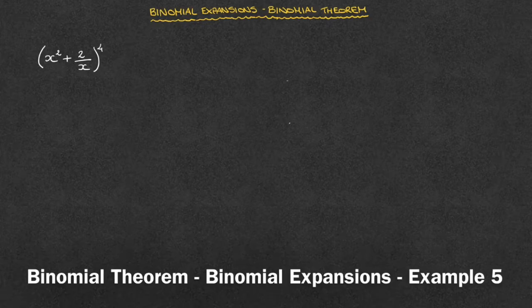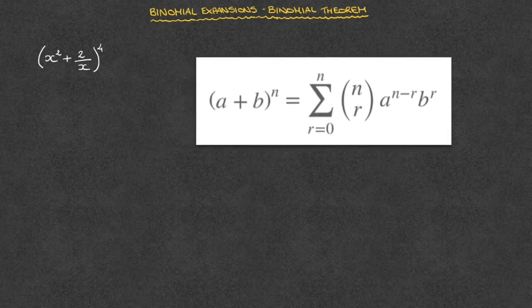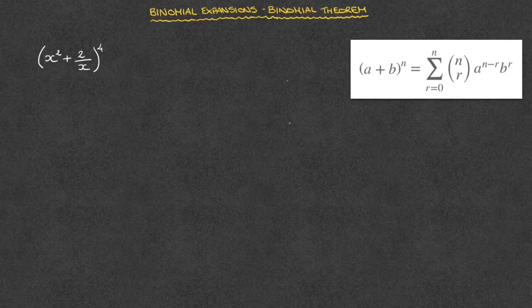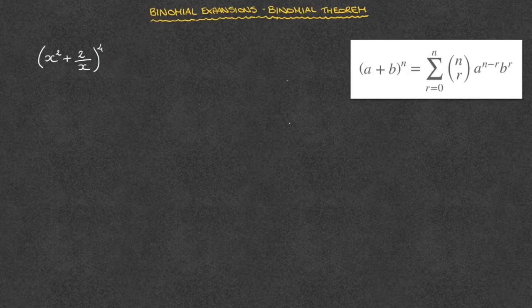Let's see how to write all the terms in the expansion of x squared plus 2 over x raised to the power of 4. Just as in our previous tutorials, we start by comparing what we have here to the left-hand side of the binomial expansions formula. In doing so, we quickly see that the only difference is that we've replaced a by x squared, b by 2 over x, and n by 4.